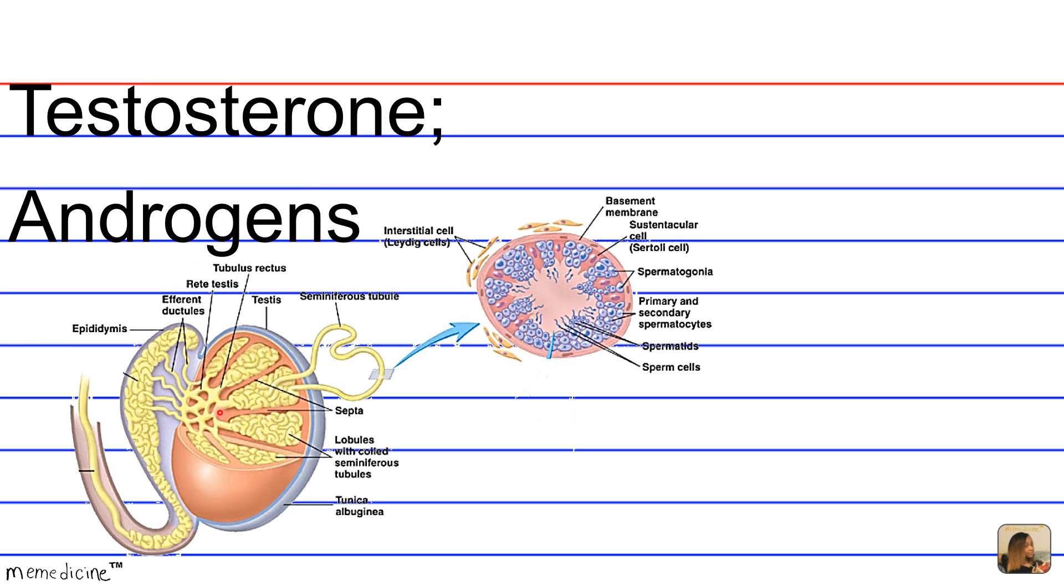So here is a slice of the male testes. Inside, you have extremely coiled seminiferous tubules, and here we have a cross-section.